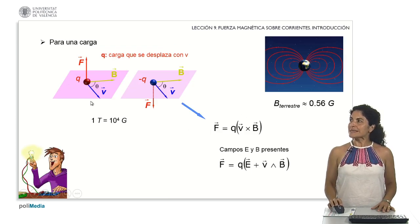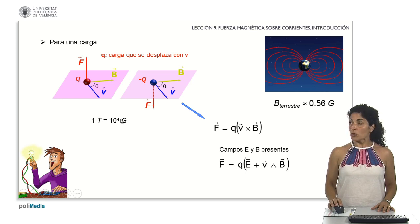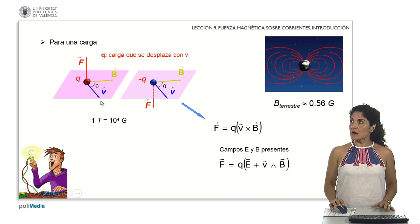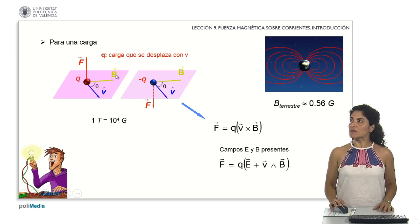Starting from the basis of all the concepts that we were analyzing in lesson number 8, taking into account what happened when a charge, whether it was positive or negative, was subjected to a movement determined by this velocity vector within the space where a magnetic field was defined.